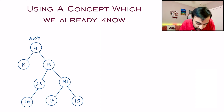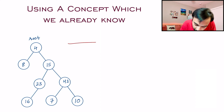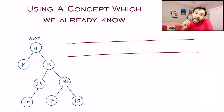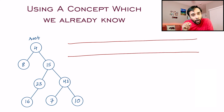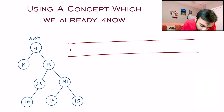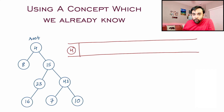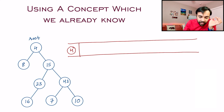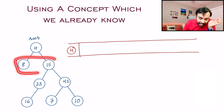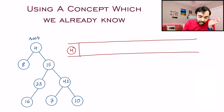You have a queue and in this queue you add all the elements one by one. You start off with the root element, which is 4. You look at 4, pop it out, and then look at the children of 4 — you can see 8 and 15 are its children, so you add 8 and then 15.